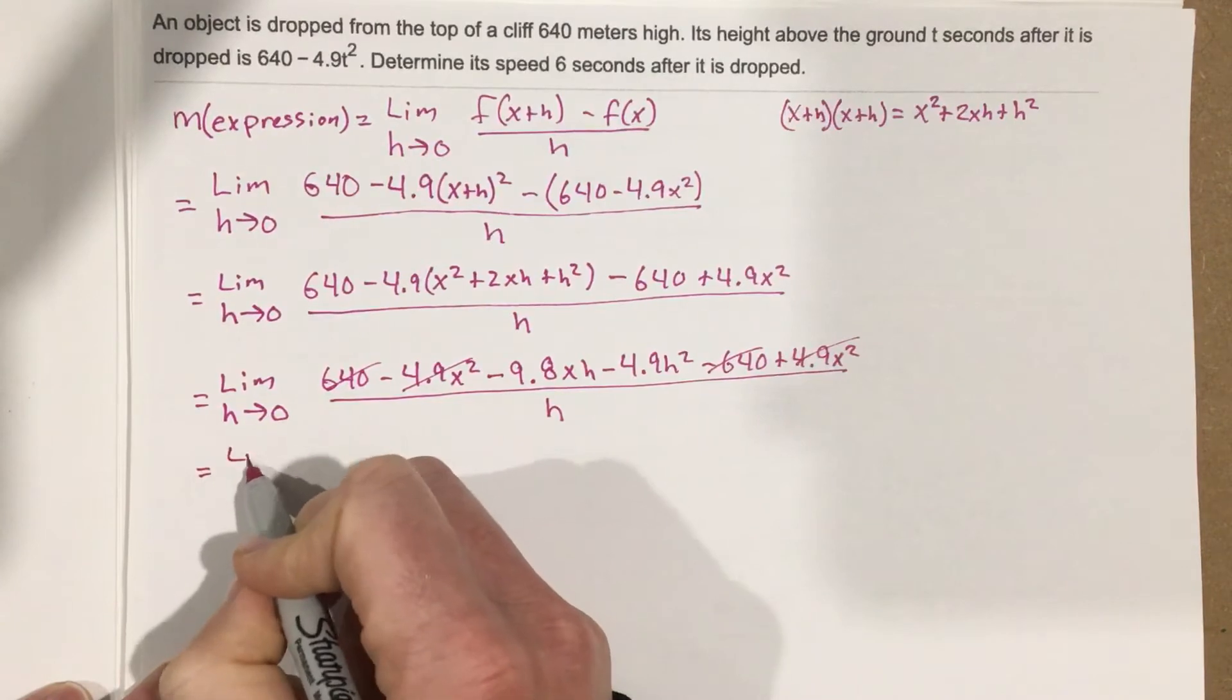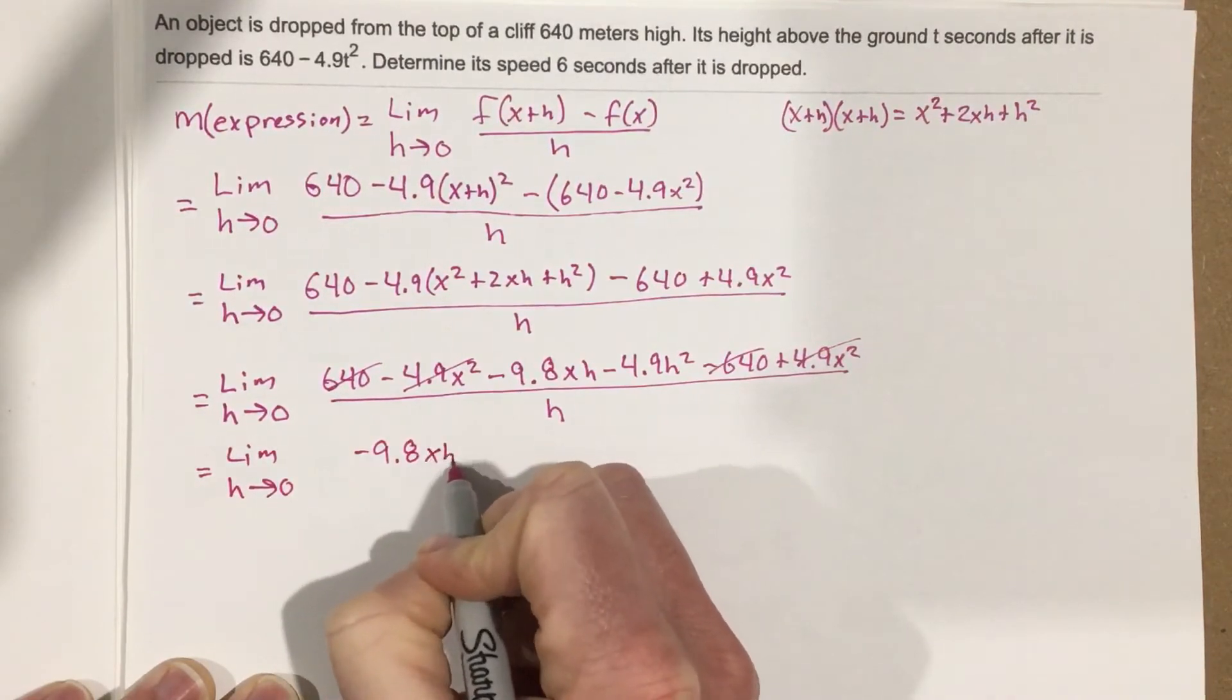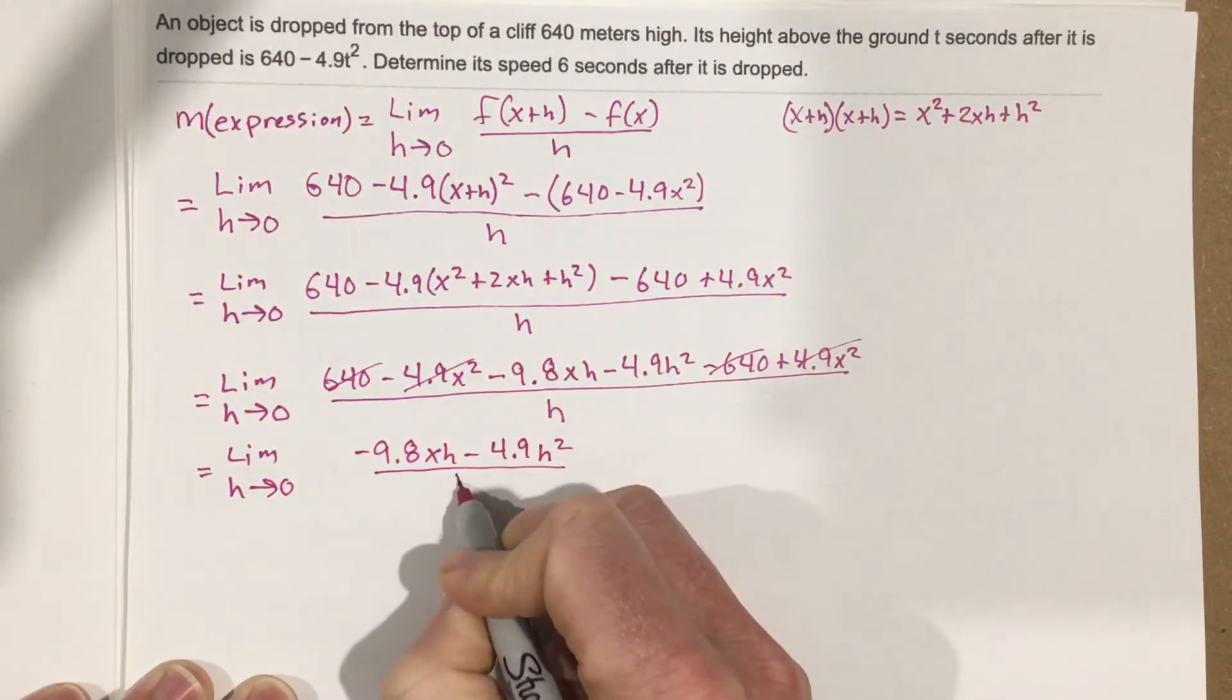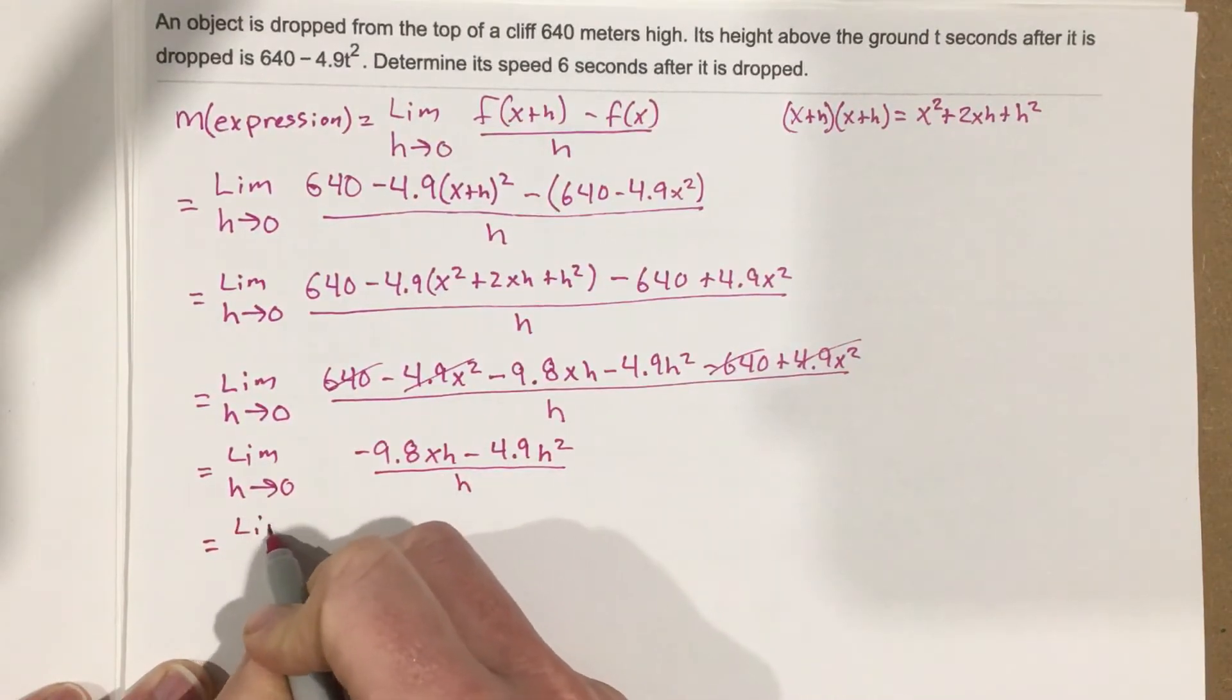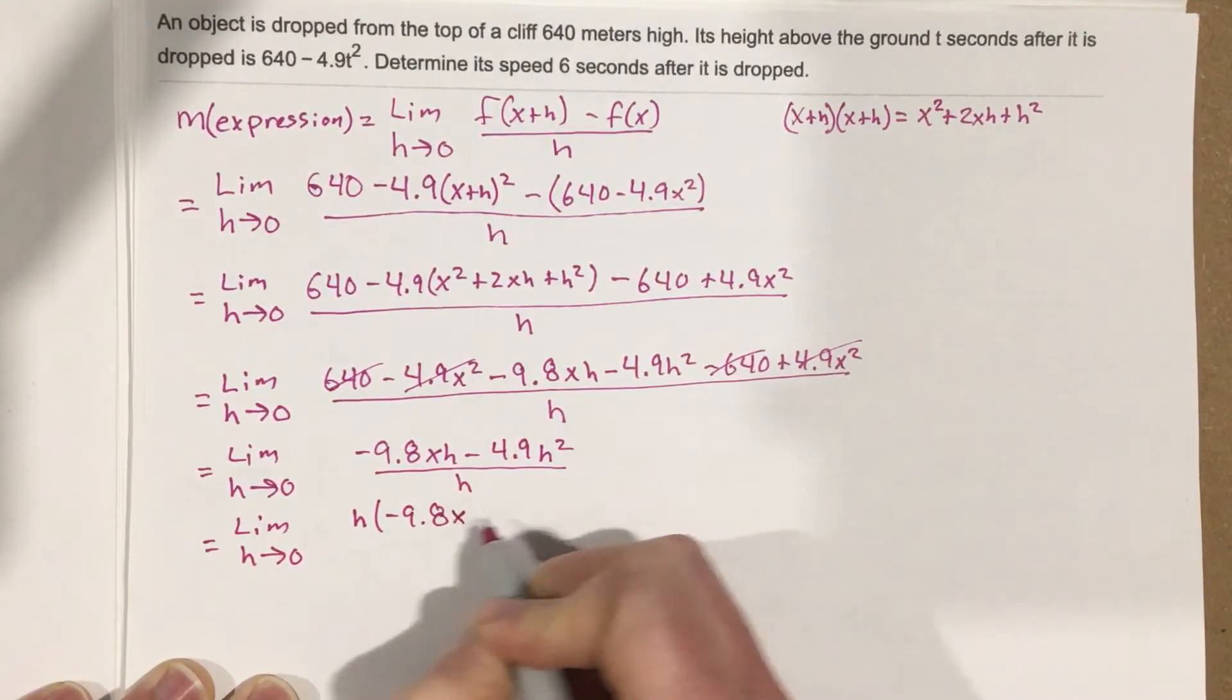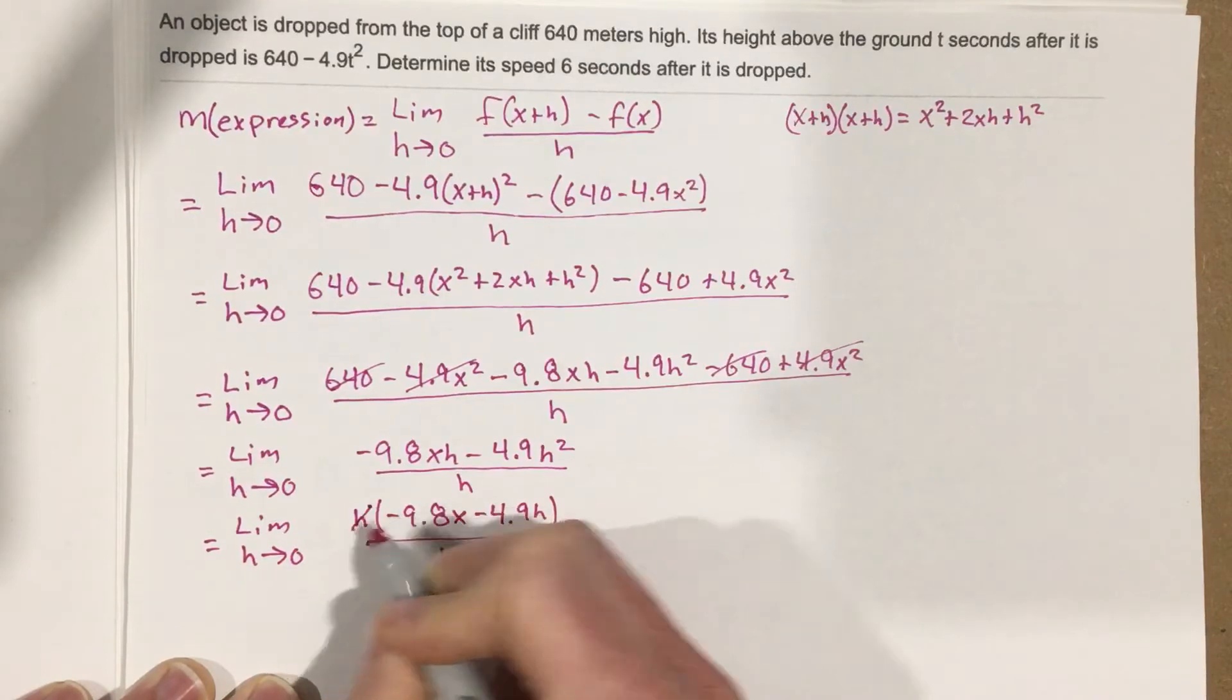Left us with limit as h approaches zero of negative 9.8xh minus 4.9h squared, all over h. Factor out an h on the top. We get limit as h approaches zero, h times negative 9.8x minus 4.9h, all over h. The h's cancel.